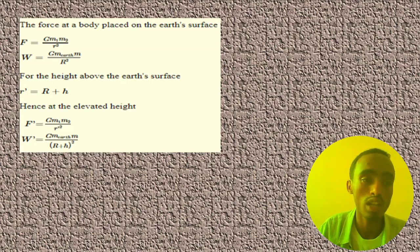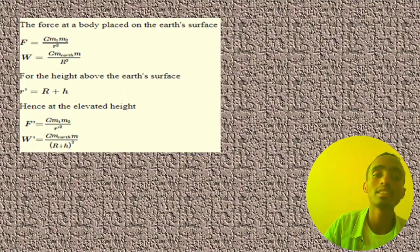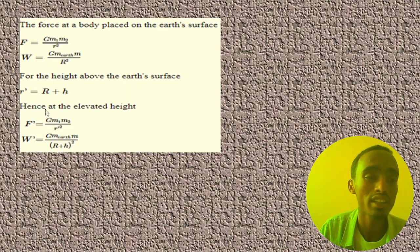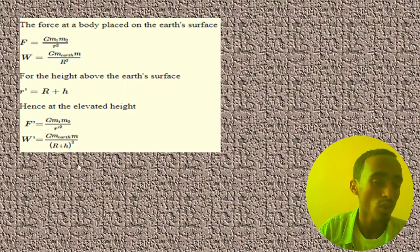Weight is equal to gravitational constant times mass of Earth times m over r squared at the Earth's surface. When the radius is increased, R is increased by h, and weight becomes gravitational constant times mass of Earth times m over the increased r, which means (R + h) the whole squared.